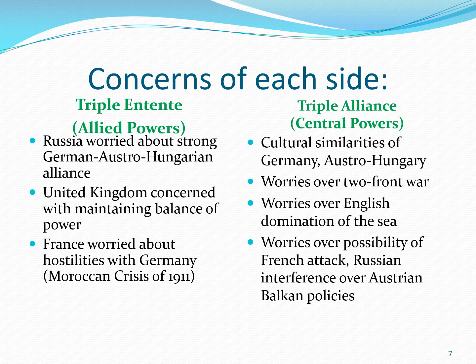They also worried about the possibility of a French attack on the western front and what would happen with Russian interference in the Balkans region. By the time we get to the beginning of World War I, the secret alliance that Russia had with Serbia was not so secret anymore. It was obvious that Russia would start to mobilize if Austria used aggressive maneuvers against Serbia in the Balkans region.